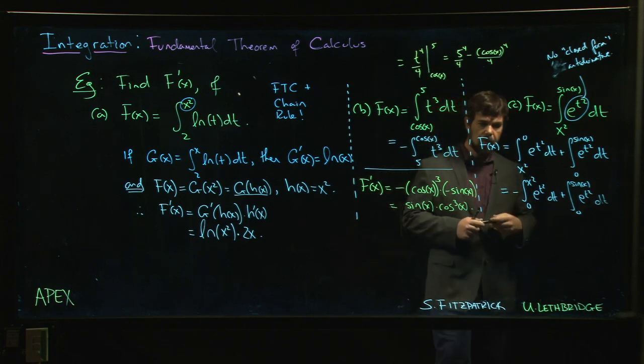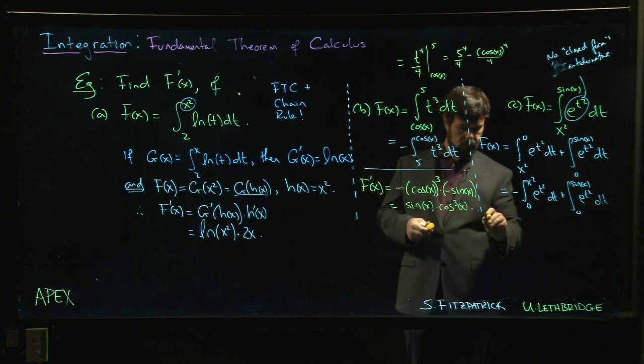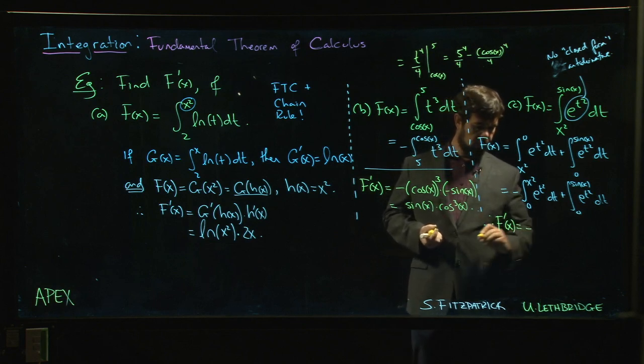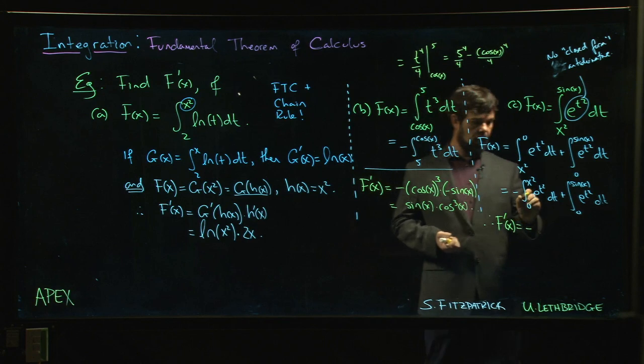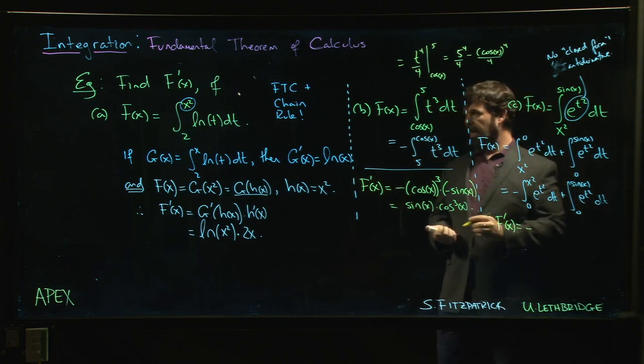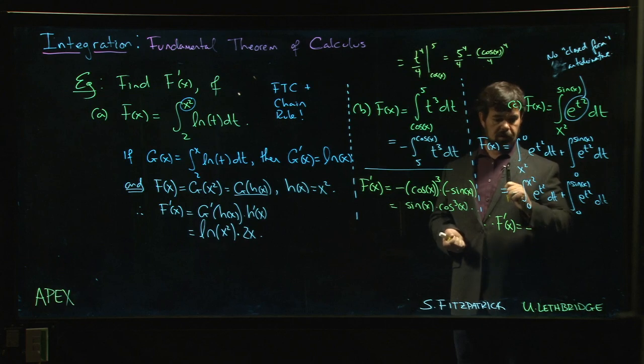All right. Now that we've done that, we can apply FTC1 and the chain rule. So remember, we're not taking the derivative of e to the t squared. When we take the derivative using the fundamental theorem, all that happens is we recover the function on the inside, and then we have to plug in the function that's up here in the limit.